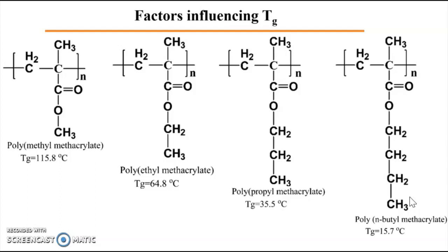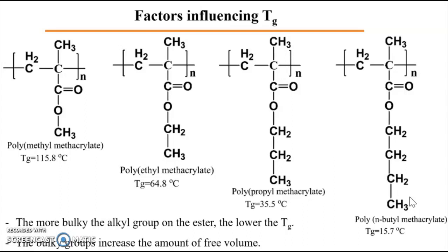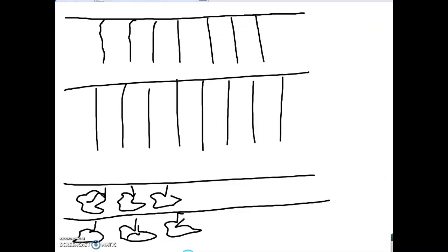Tg is directly related to the free volume in the medium. With more free volume, less temperature is needed to reach enough free volume for the polymer chains to move and transition from one state to another, reaching the Tg of this polymer. As a conclusion: the more bulky the alkyl group on the ester, the lower the Tg. The bulky groups increase the amount of free volume. This is applicable until a certain number of carbons on the R substituent — up to 8 carbons.